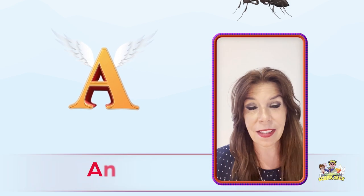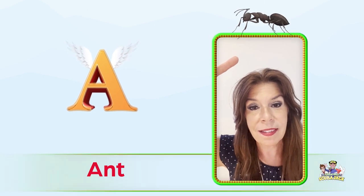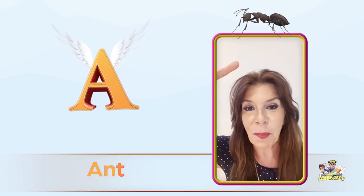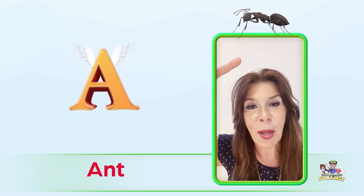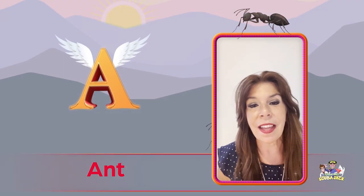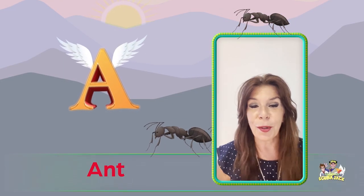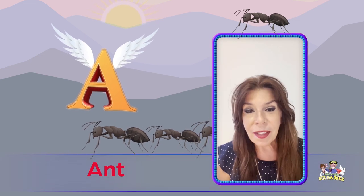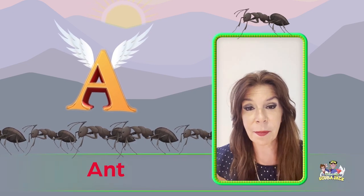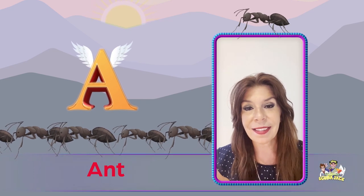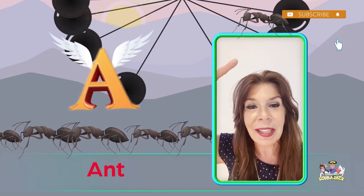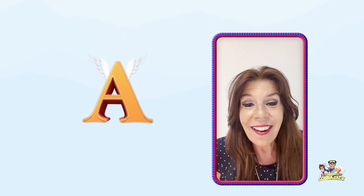The next word is ant. Do you see the ant above my head? Can you say ant? Ant. One more time — ant. Great job! What color is the ant? Black! You're so smart. Do you know that song — the ants go marching one by one, hurrah hurrah? We'll have to sing that song too! Let's say it one more time — ant. And what color is the ant? That's right, it's black.